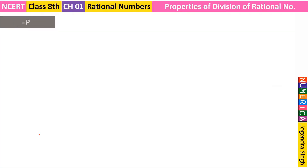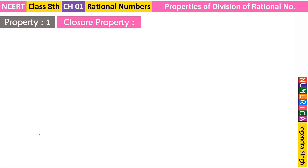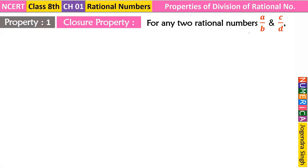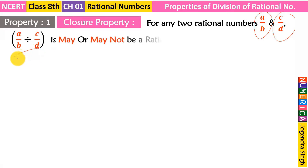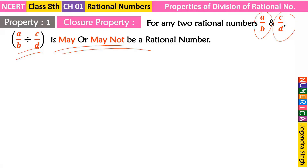Let's start with the first property — closure property. What this property says: for any two rational numbers A upon B and C upon D, when we divide them, the result may or may not be a rational number. That means, if we perform division of rational numbers, the result may be rational or not.